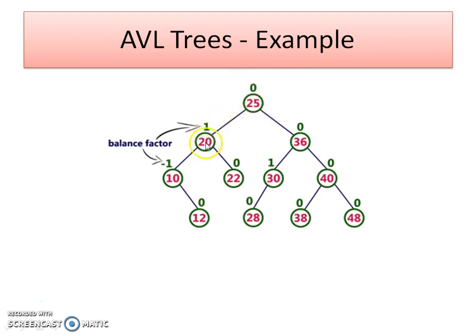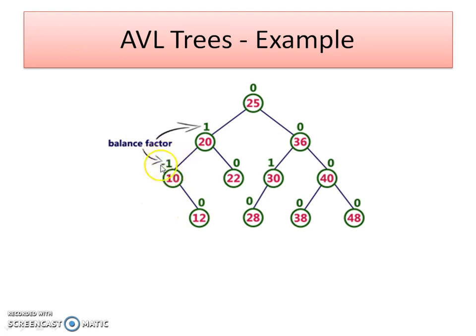For node 10: the height of the left subtree is 0 and the height of the right subtree is 1. So 0 minus 1 equals -1 — the balance factor is -1. In this way we can find the balance factor of every node. Since every node satisfies the balance factor property — that is, the balance factor is either -1, 0, or +1 — the given tree is an AVL tree.